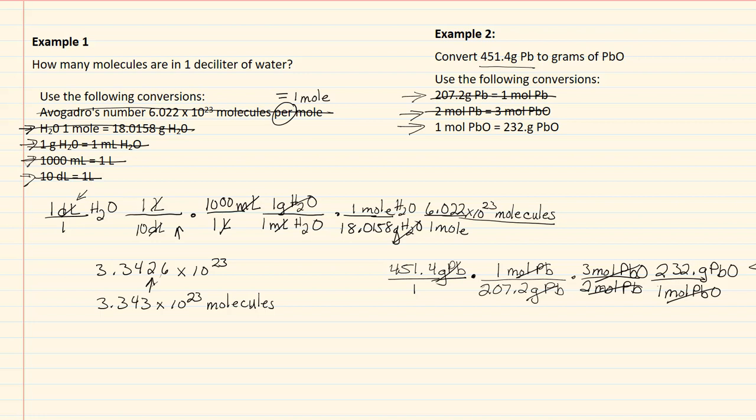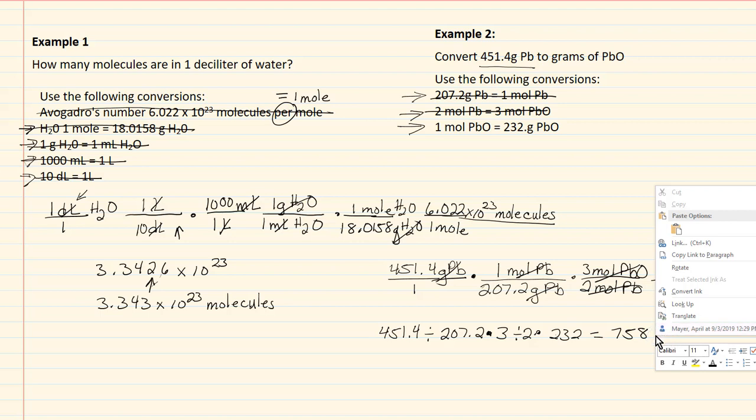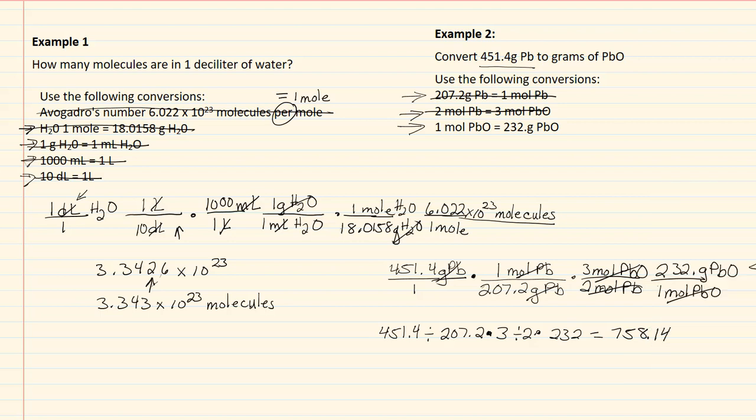Remember, everything on top is multiplied. Everything in the denominator is divided. So that gives me 758.14. And we're just going to bring this one to two grams of PbO.